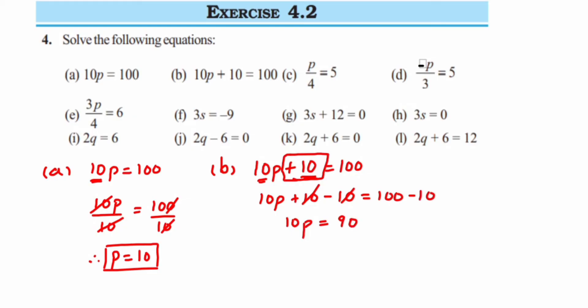Now we have 10p = 90. The 10 is in multiplication, so divide 10 on both sides. The 10s cancel — you can cancel the zeros or simplify 90/10. Either way, we get p = 9 as the answer.